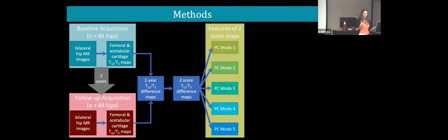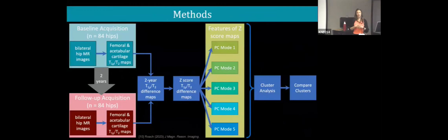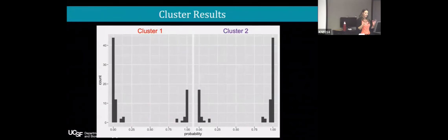We ran PCA on these Z score maps, used the first five modes to perform a cluster analysis. Because we had T1-Rho and T2, we had 10 modes of variation total. Cluster analysis can be a bit black-boxy, so I struggled to find different ways to interpret this data. The algorithm gave me two clusters — but what does it mean? I used the Bayesian information criterion for this analysis, and it identified subjects in each cluster.